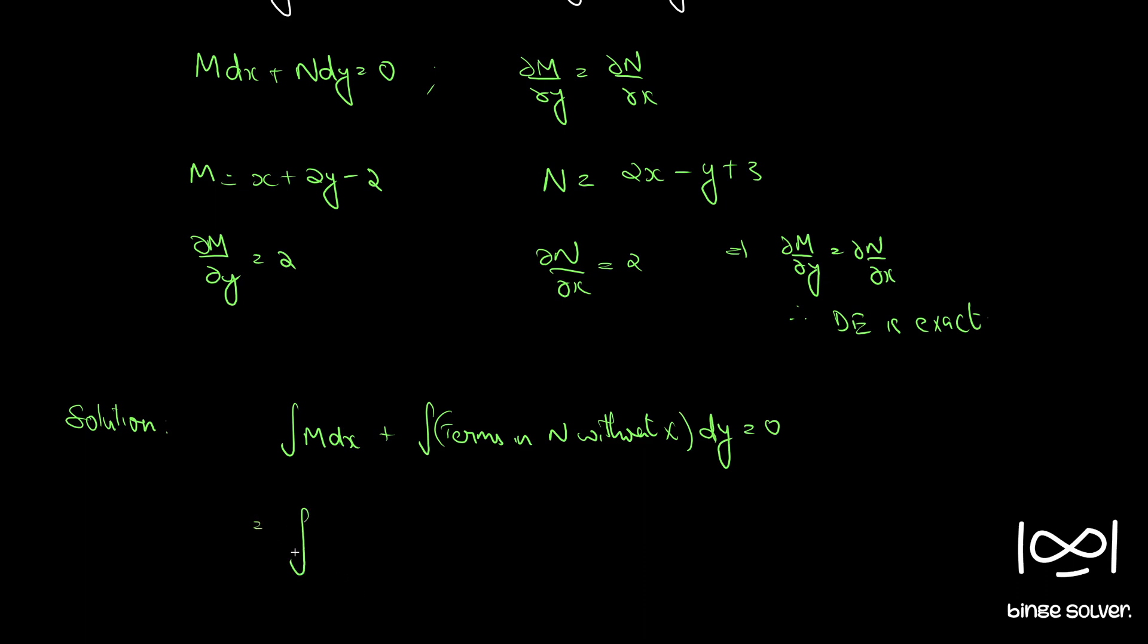That becomes integral x plus 2y minus 2, where y is a constant, dx